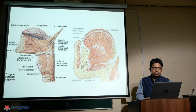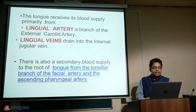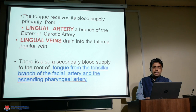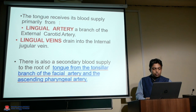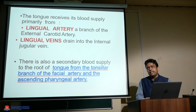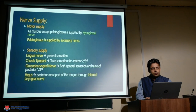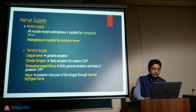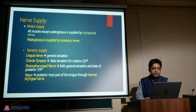The tongue receives its blood supply primarily from the lingual artery, which is a branch of the external carotid artery, and lingual veins which drain into the internal jugular vein. The base of tongue receives additional blood supply from the tonsillar branch of the facial artery and the ascending pharyngeal artery.